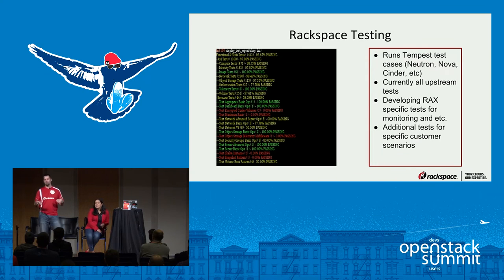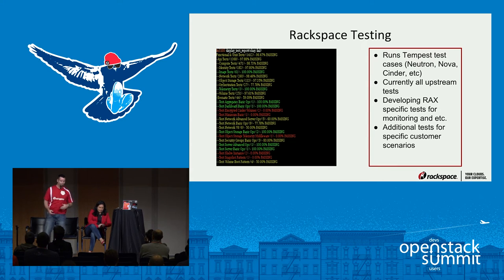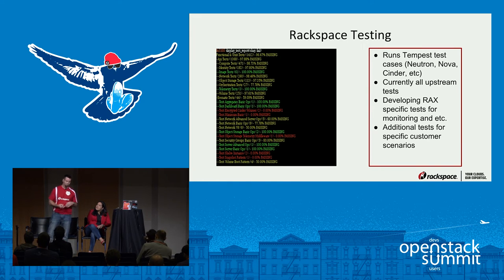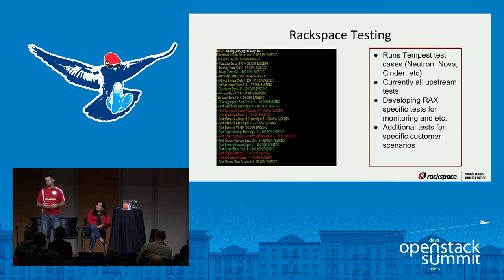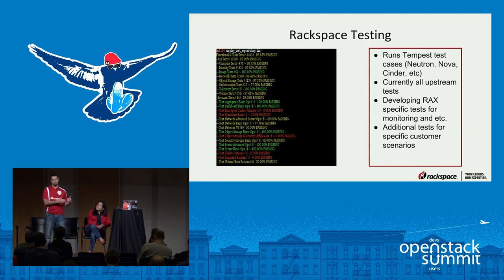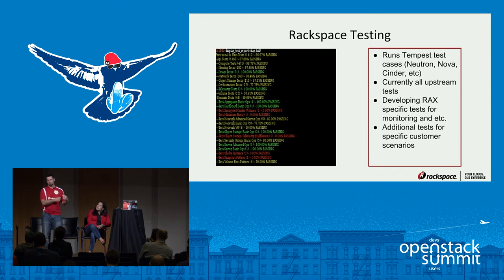What does testing look like at Rackspace? 1,600 Tempest tests. Our test cases right now are all upstream. We're currently developing some Rackspace and customer-specific test cases, but everything we're running right now is upstream test cases. Some of the things we're working on are test cases around monitoring agents and custom use cases our customers have for their specific workloads, so we can validate that key scenarios customers provide are going to work every time we get a new build from Red Hat.